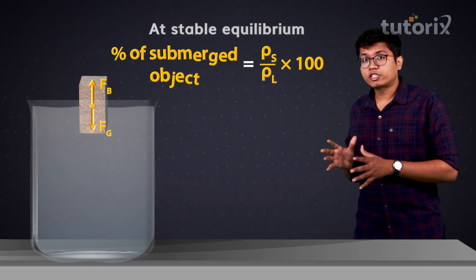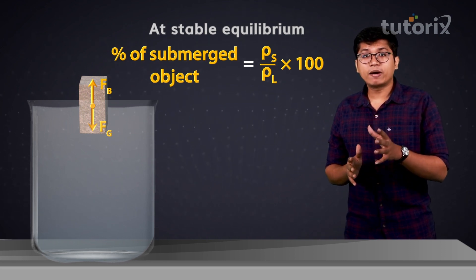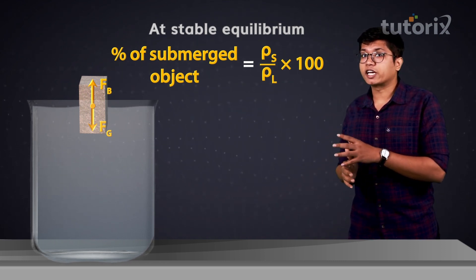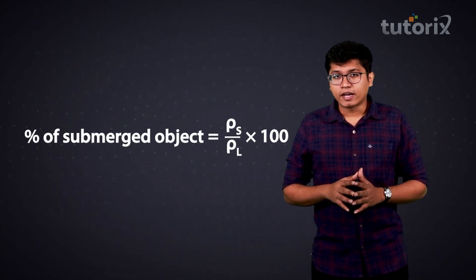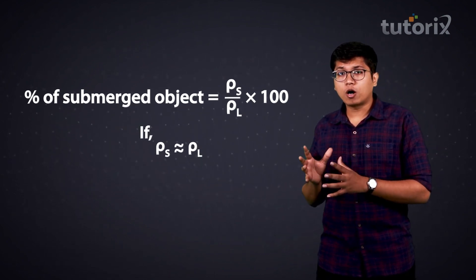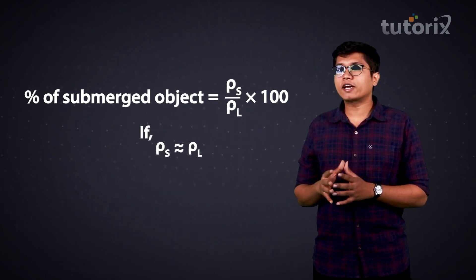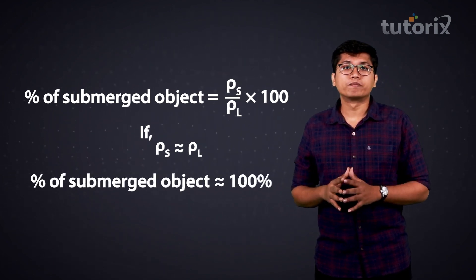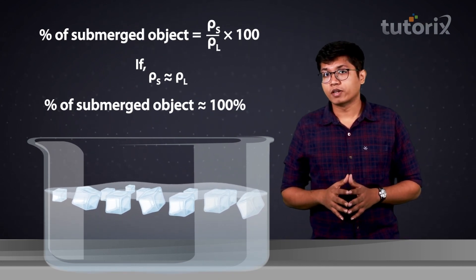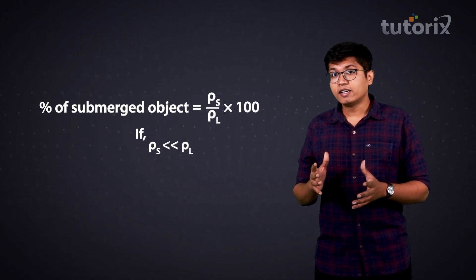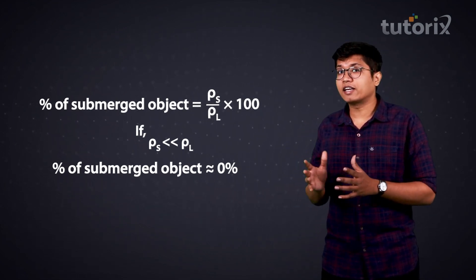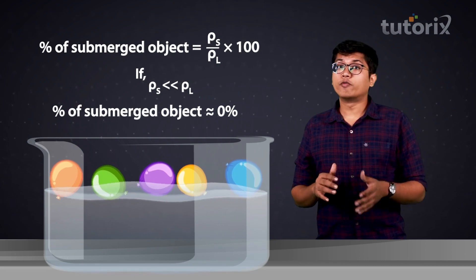So we now know how much of the volume is going to stay under a liquid, and that depends not just on the density of the object but also on the density of the fluid on which it is floating. If the density of the object is almost the same as the density of the liquid, it will have most of its volume inside the fluid — take ice cubes floating on water as an example. However, if the density of the object is much less than that of the fluid, the object will have a very small fraction of its volume submerged — a good example would be balloons floating on water.